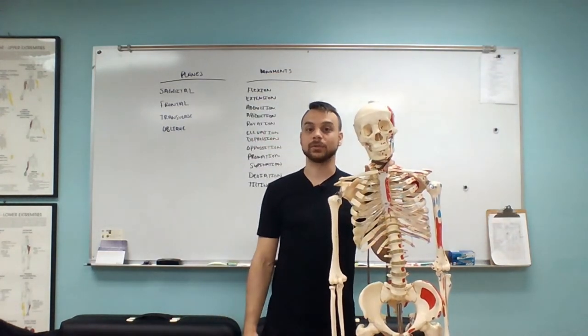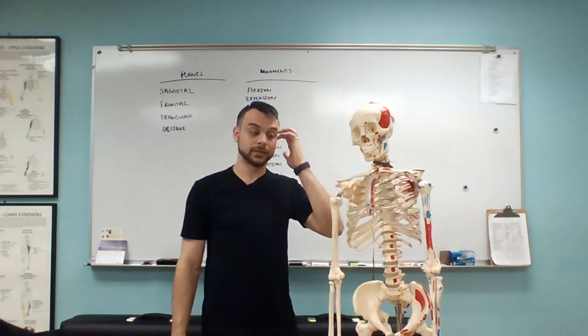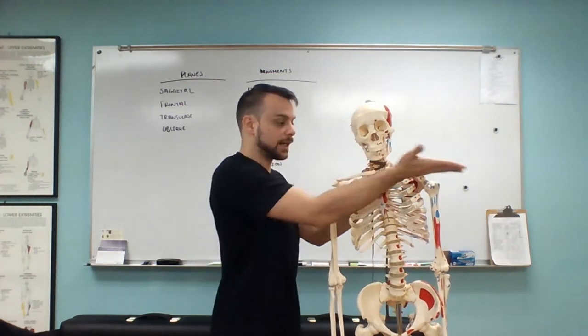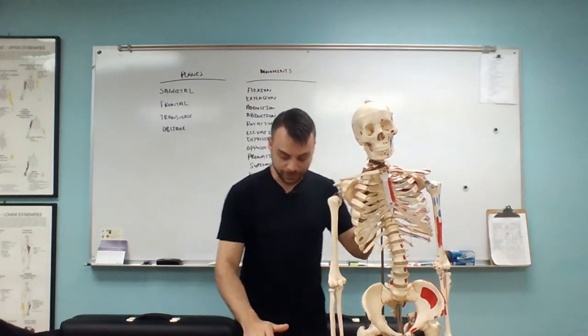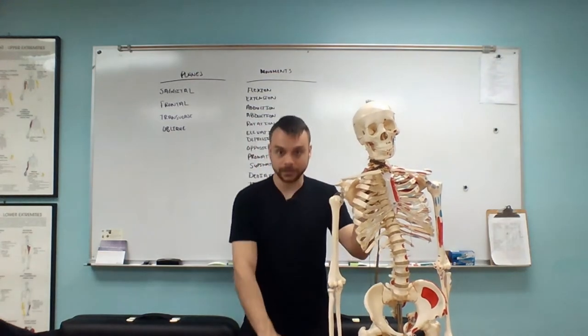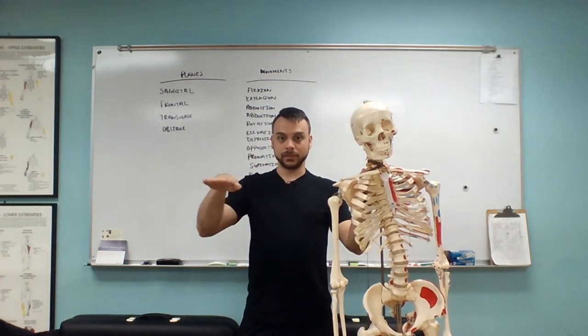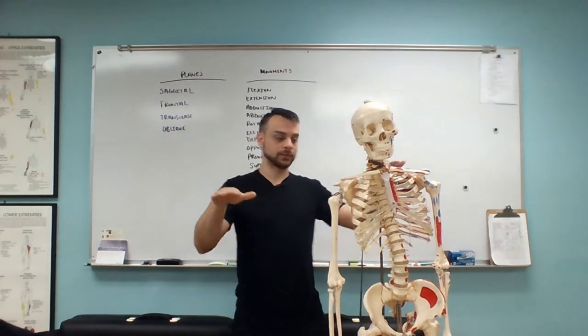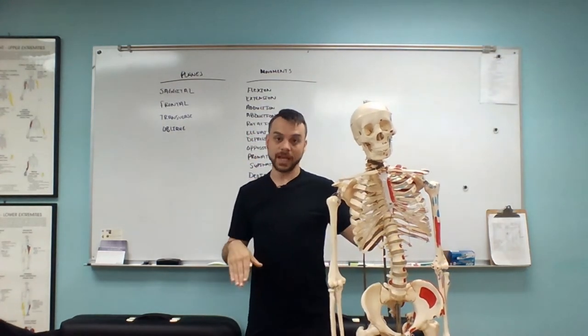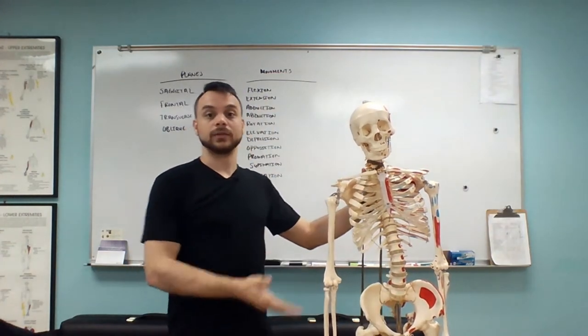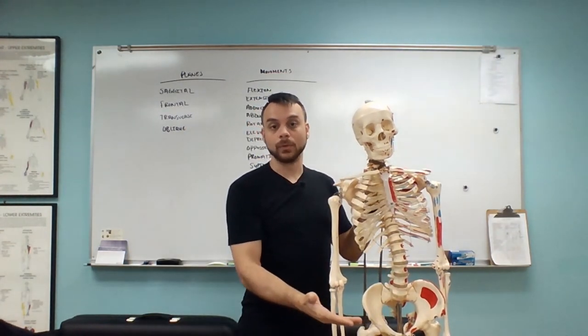The next plane is the transverse plane — transverse meaning across — which runs across the body. Imagine the floor you're standing on: it's a flat plane. If we were to take that floor and just levitate it upward, that's our transverse plane. So the transverse plane is going to basically chop off Mr. Bones's head, separating us into top and bottom parts, or superior and inferior margins.